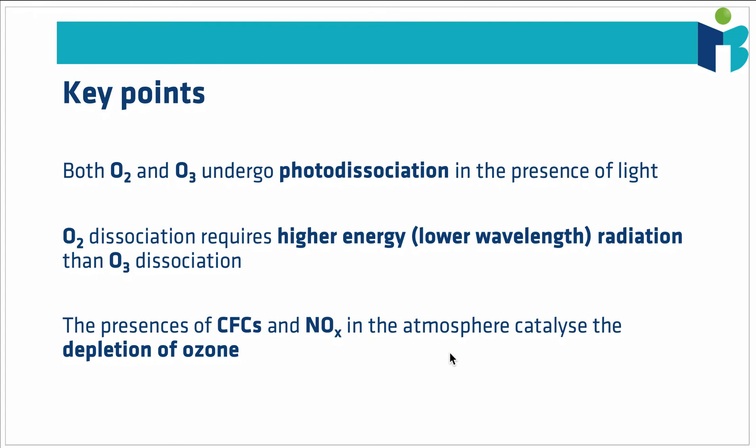Key points to take home: We saw that O2 and O3 can both undergo photodissociation, both be split into smaller component species by light. We saw that O2, because it had that stronger double bond, required higher energy and lower wavelength to dissociate that bond compared to O3, where we have a bond order of 1.5. We then saw how CFCs and oxides of nitrogen in the atmosphere can catalyse the depletion of ozone.